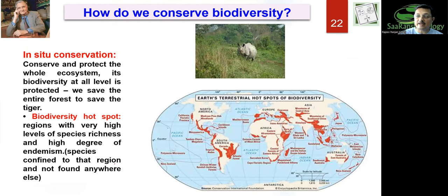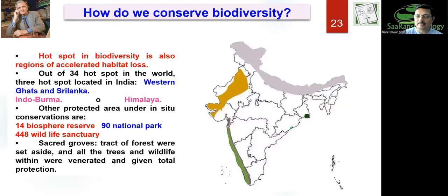How do we conserve biodiversity? In situ conservation means protecting the whole ecosystem. Biodiversity hotspots are areas of high diversity where human activity is a threat. There are 34 hotspots in the world; in India, there are three hotspots: Western Ghats with Sri Lanka, Indo-Burma including the North East, and the Himalayas. India has approximately 14 biosphere reserves, 90 national parks, and 448 wildlife sanctuaries. In Meghalaya, there are sacred groves — tribal communities consider the trees as sacred and worship them, so they don't cut them, protecting the forest.